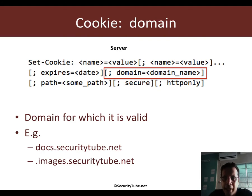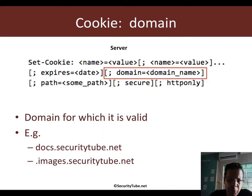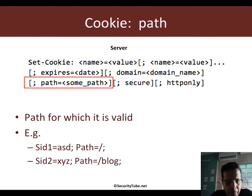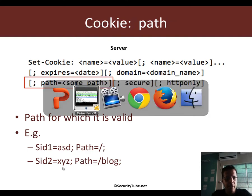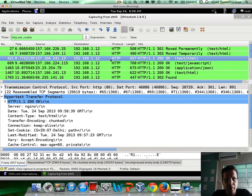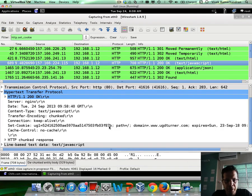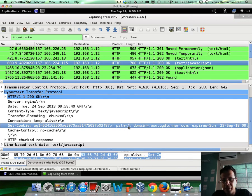Domain: this is really the domain or subdomain for which the cookie is valid and should be used, such as docs.securitytube.net or .images.securitytube.net — where the dot prefix means any subdomain based out of images.securitytube.net. Similarly, you have path, where the path can dictate when certain cookies should be sent and when they shouldn't. For example, you can set the path to be the root or /blog or pretty much any other valid path within your application. In this set-cookie example, you actually have path equals the root folder.